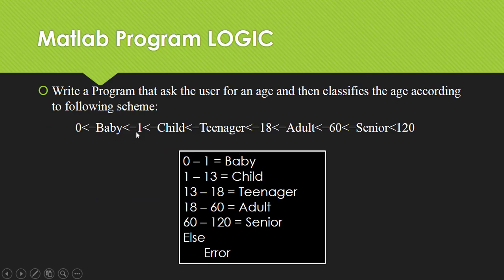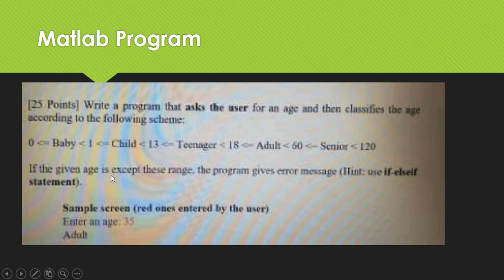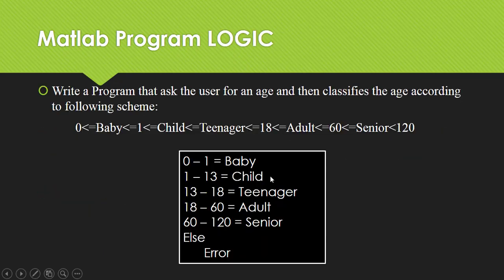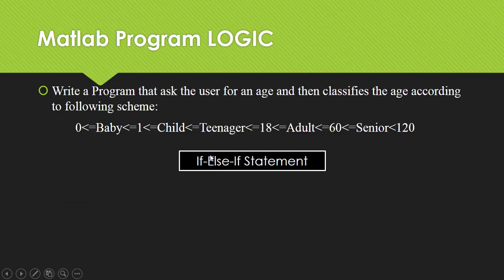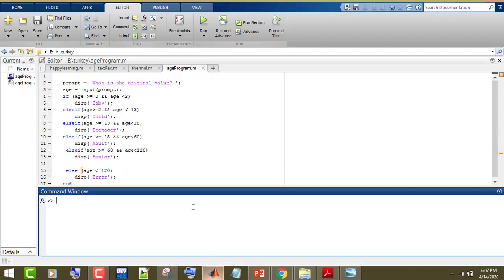If the age is between 0 and 1, we will print 'baby'. If the age is between 1 and 13, the message is 'child'. If the age is between 13 and 18, then 'teenager'. If the age is between 18 and 60, then 'adult'. If the age is between 60 and 120, then 'senior'. Else, if the user types a number not in this range, we will print an error message. We are using an if-then-else statement.